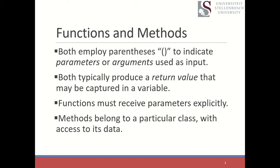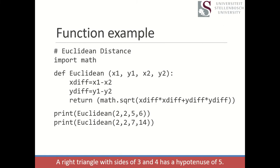Functions differ from methods in that methods belong to something called a class — a really important concept in object-oriented programming. For our example, we'll look at the string class, which has quite a few methods associated with it. But first, let's start with a function example. In bioinformatics we very frequently need to decide how similar two things are, and one common measure is the Euclidean distance.